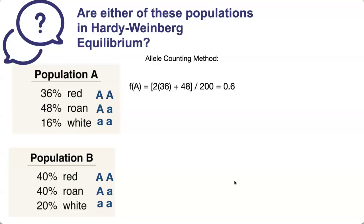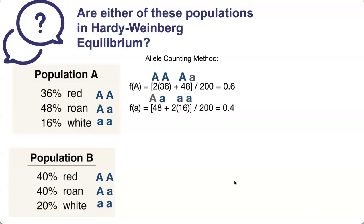This is the formula we use for the big A allele for population A. I'm going to highlight where these numbers come from. For the homozygous dominant, there are two copies of the big A, so we must do 2 times 36. We're assuming there are 100 individuals in this population, which means there are a total of 200 alleles because these animals are diploid. So the frequency of the big A allele is 0.6, and the frequency of the little a allele is 0.4.